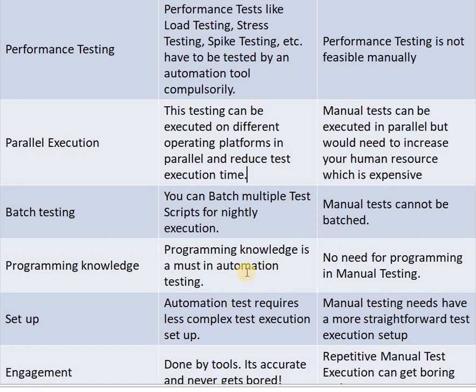Next parameter is batch testing. In automation testing, you can batch multiple test scripts for nightly execution, but in manual testing, testing cannot be batched. Next parameter is programming knowledge. Programming knowledge is a must in automation testing because it works on scripts and different tools, but in manual testing there is no need for programming knowledge.